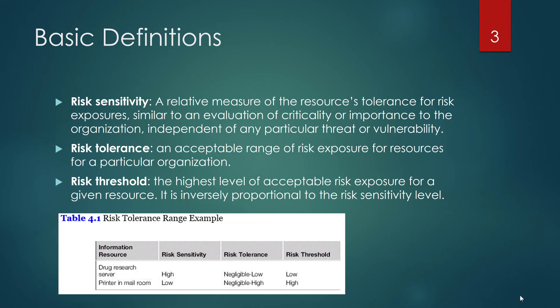For example, it may be that if you break into the system you can only see one record, or it may be that you break into the system and you can see a billion records. Those have different risk sensitivity associated with them.